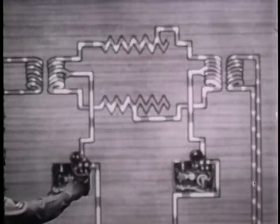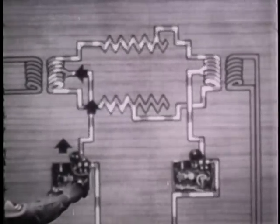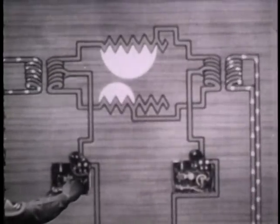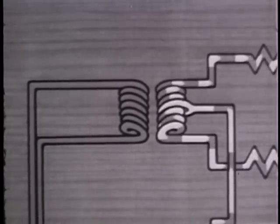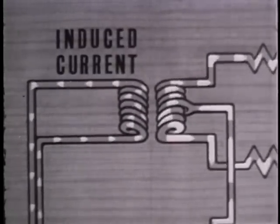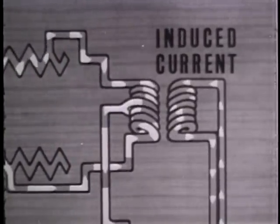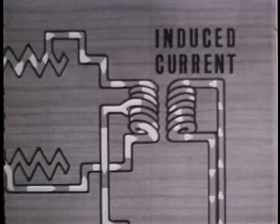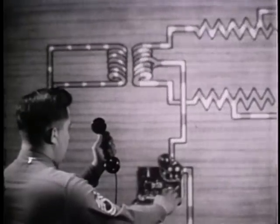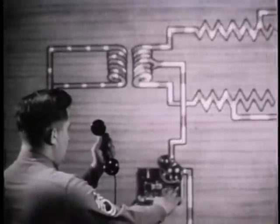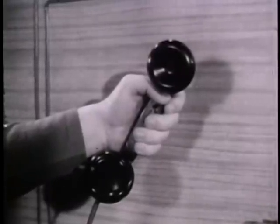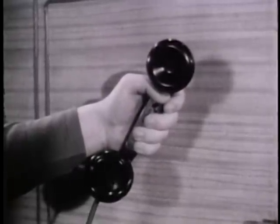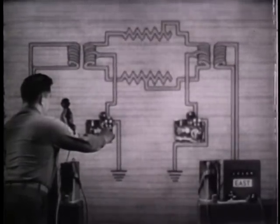As usual, telegraph current flows to the midpoint of the winding of the repeating coil. Because of the unequal resistances, however, the current no longer divides equally between the two halves of the winding, and the magnetizing effects of the two currents no longer cancel each other. Thus, current is induced in the other windings of both repeating coils at the beginning and end of each impulse. This produces crossfire interference in the telephone channel — called key thumps. Other than being an annoyance, they do not affect telephone communication.